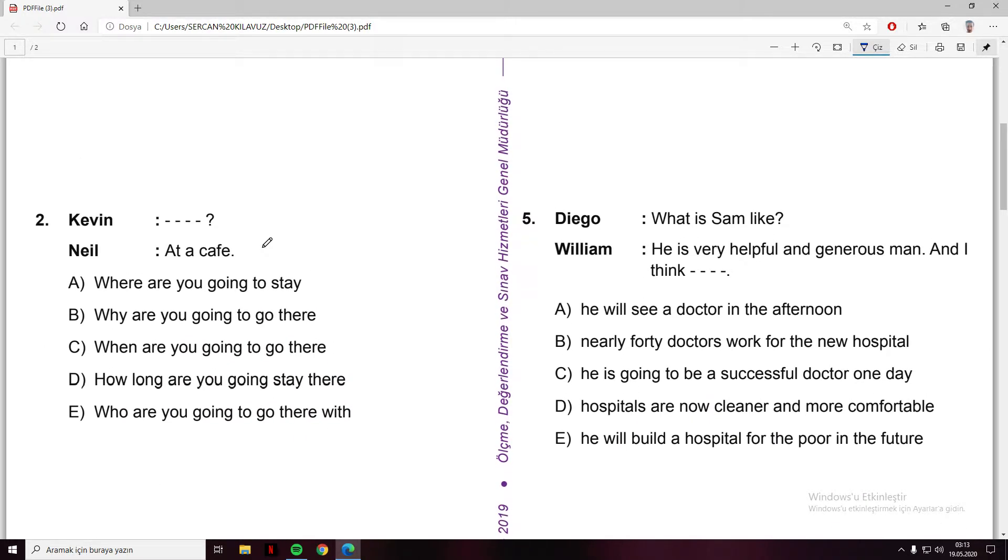What about question two? Kevin asks a question, Neil says at a cafe. Where are you going to stay? At a cafe. What - why are you going to go there? No. How long? No. It's about a place, and where is about place. Where are you from? I'm from Istanbul, like that.